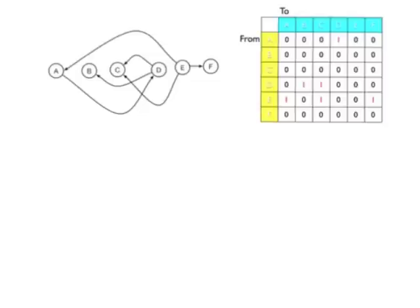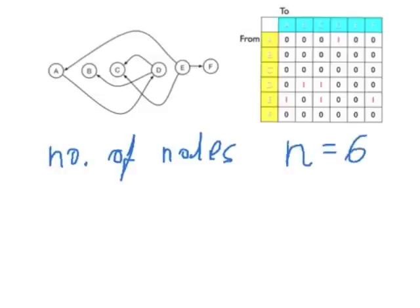One of them is the number of nodes. So this we denote by n, and in this case we have n equal to 6.